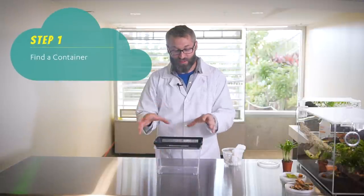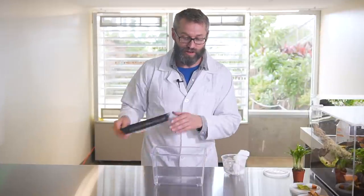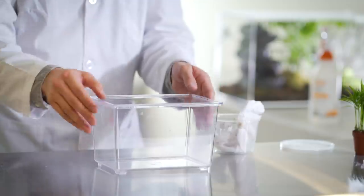So the first thing you're gonna need is just something to put the habitat in. I always use mason jars or deli cups when I was a kid. This is a critter carrier, you can get this at any pet store and this makes a nice little habitat.